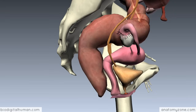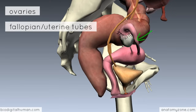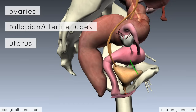The main parts I'm going to talk about are the ovaries, which are the primary female sex organ. Then you've got the fallopian tubes, or the uterine tubes as they're also known, which connect to the uterus — this muscular sac where the embryo develops into a fetus, which develops into a baby. And then you've got the vagina, which opens up in the perineum.